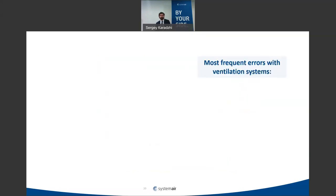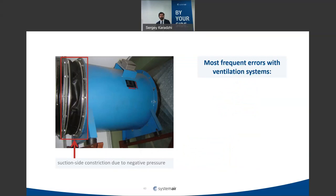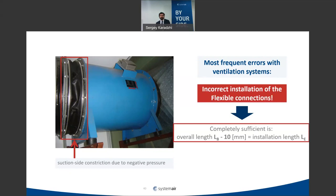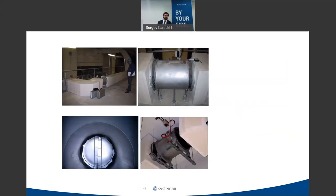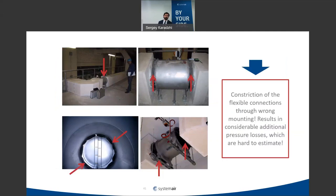Another bad installation example involves flexible connections that are sucked in because the user did not maintain the correct distance between the duct and the fan on the suction side. This creates additional losses that could easily be avoided by using the correct length between duct and fan.